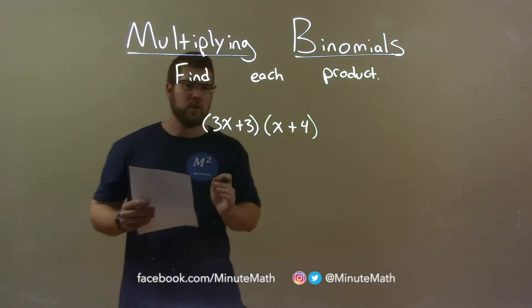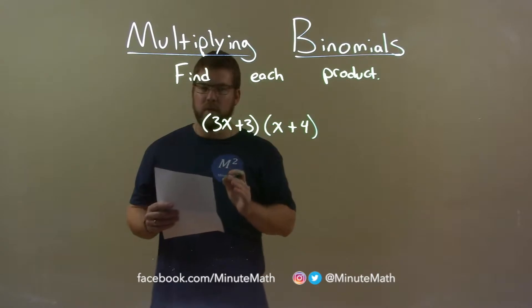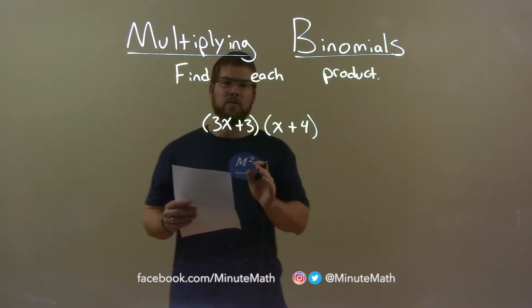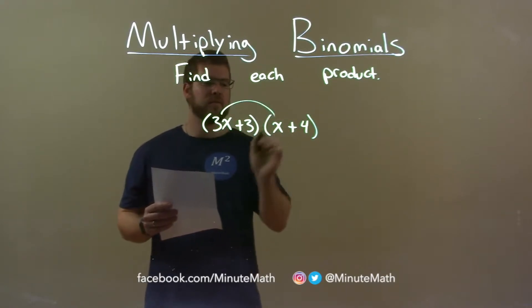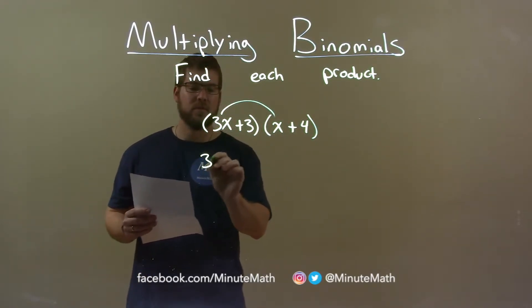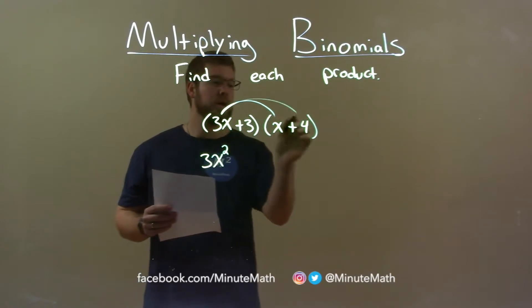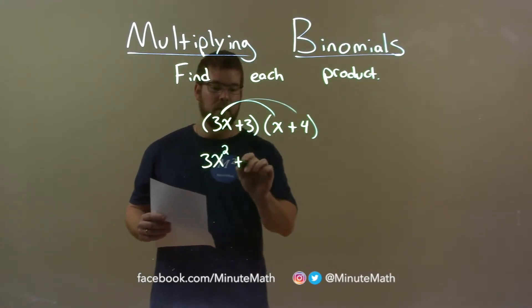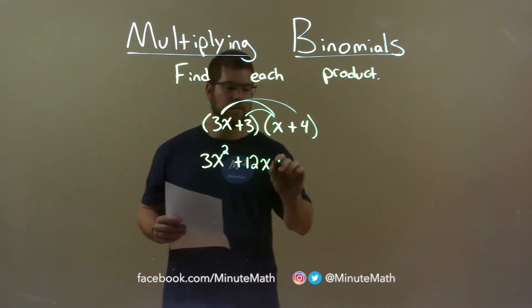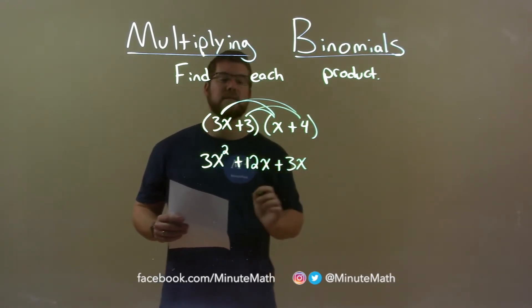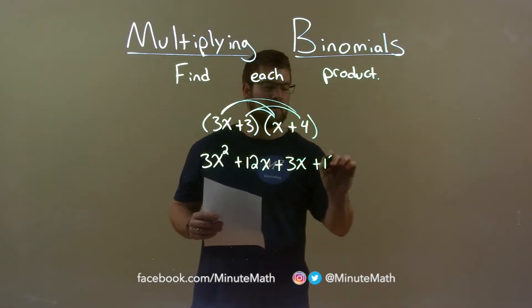Well, we first want to take all parts of our first parenthesis and multiply it by all parts of our second parenthesis. So, 3x times x is 3x squared, 3x times 4 is 12x, 3 times x is 3x, and 3 times 4 is 12.